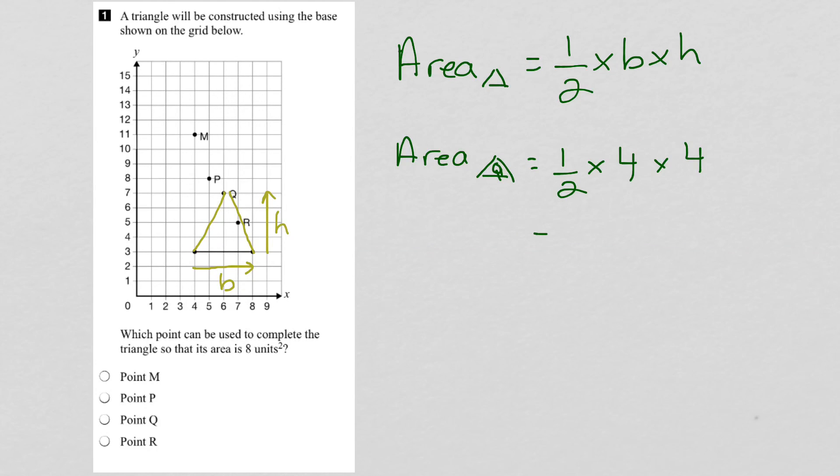And when we work this out, 1 half times 4, or half of 4 is 2, times the height of 4, 2 times 4 is 8 units squared. Aha! And that's what we want. Therefore, we know that the answer here is going to be point q. The triangle formed by point q will give us an area of 8 units squared.